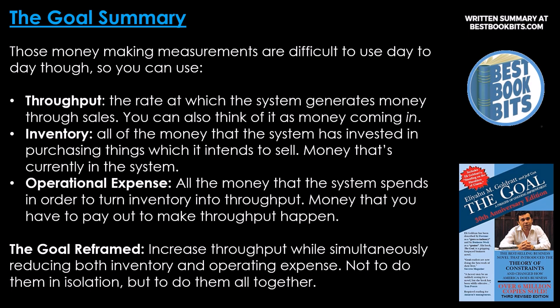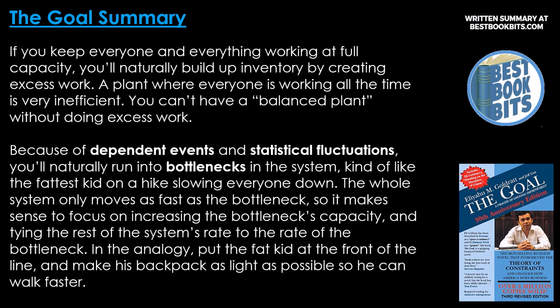If you keep everyone and everything working at full capacity, you'll naturally build up inventory by creating excess work. A plant where everyone is working all the time is very inefficient. You can't have a balanced plant without doing excess work. Because of dependent events and statistical fluctuations, you'll naturally run into bottlenecks in the system — kind of like the fattest kid on a hike slowing everyone down. The whole system only moves as fast as the bottleneck, so it makes sense to focus on increasing the bottleneck's capacity and tying the rest of the system's rate to the rate of the bottleneck.